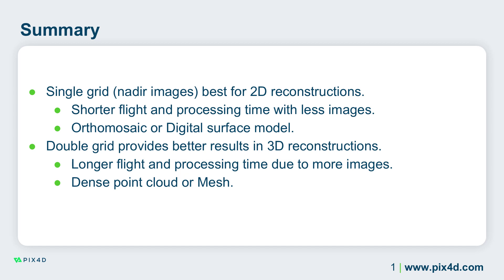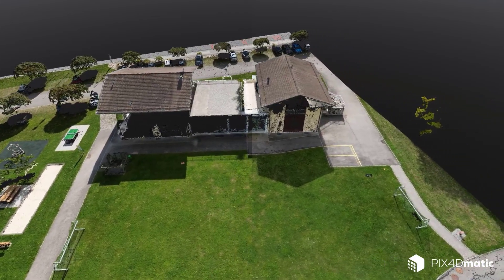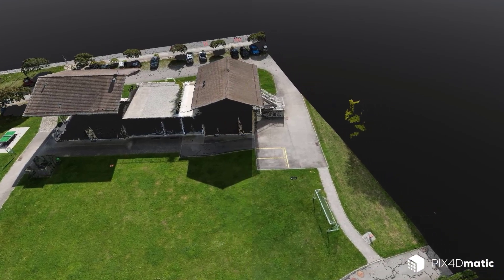If you require vertical faces, a double grid with the camera at an oblique perspective will provide better results. Choosing which grid mission to fly depends on the project's final deliverables. If you only require a digital surface model or an orthomosaic, a single grid mission will save time capturing the images and processing them. If you need better 3D reconstructions, fly a double grid with the camera at an oblique angle around 70 degrees. If you don't know, I recommend flying a double grid so that you or your client can decide later. I hope this video showing the differences between single and double grid missions was helpful. When capturing images for photogrammetry, always determine your desired deliverables, GSD, and project goals before capturing the images. Happy mapping!